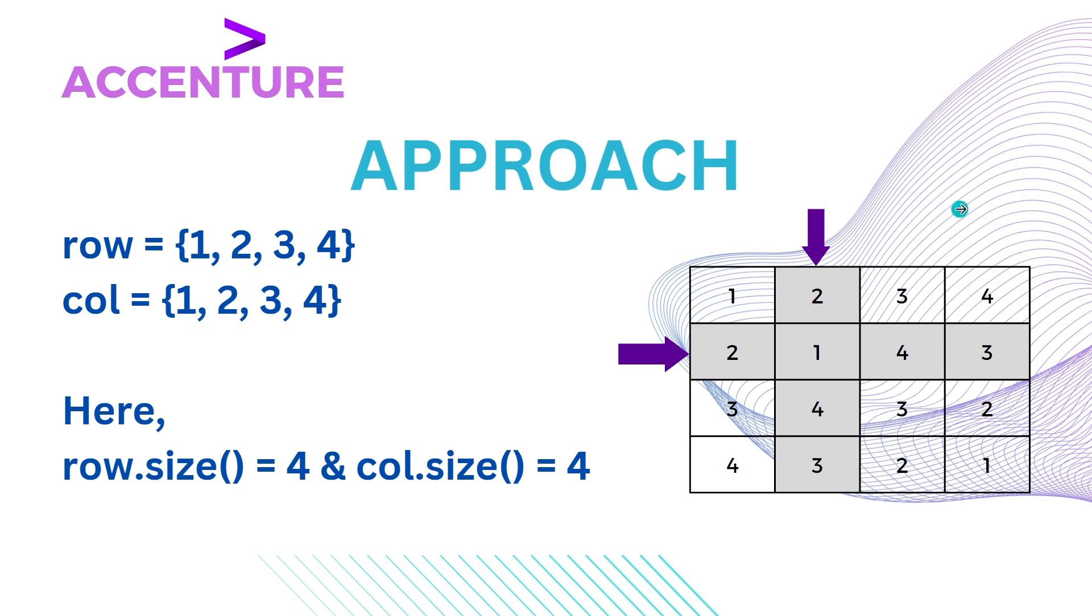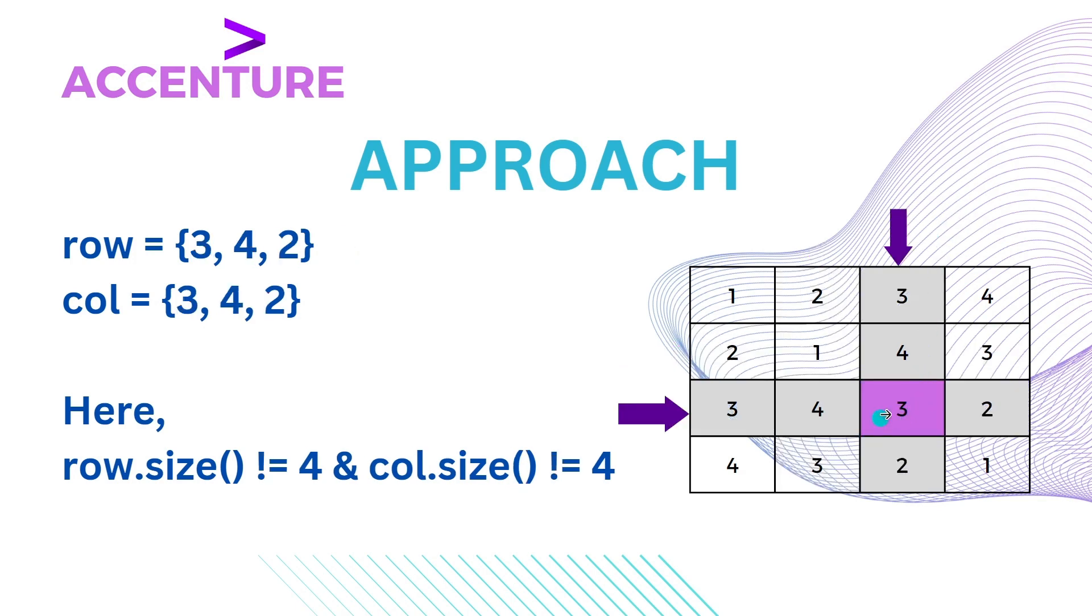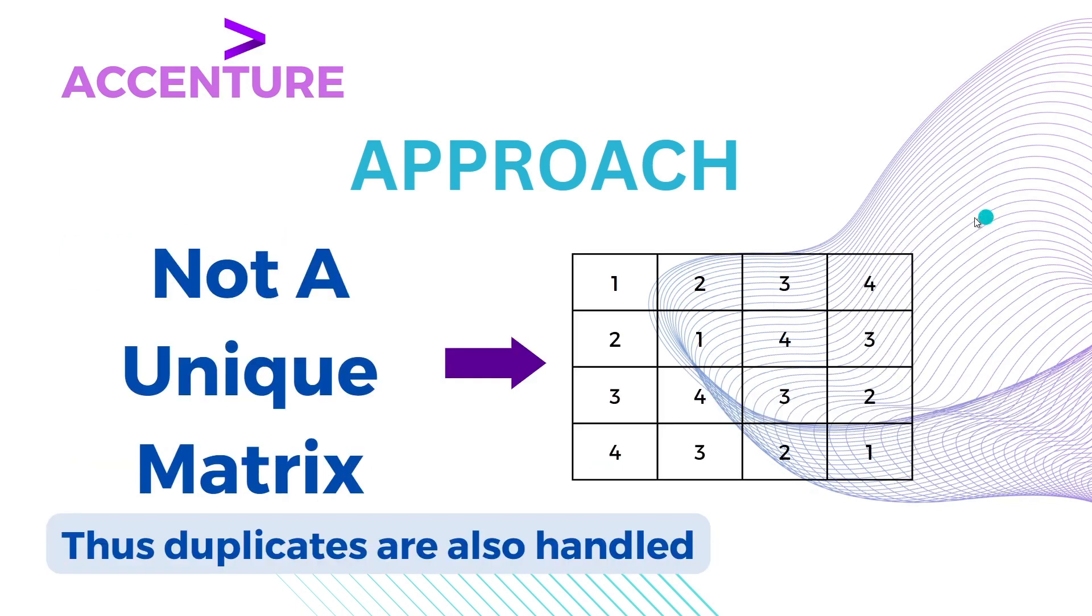Here also they contain all the numbers. Now in the third column and row, observe the sets - they contain only 3, 4, and 2, meaning that 1 is missing which also implies that a duplicate value is present here. In this case 3 is duplicate, so the size of our sets is not equal to 4 and thus we can say that this is not a unique matrix. This approach also deals with the duplicate values.